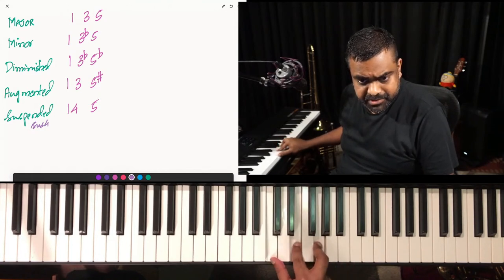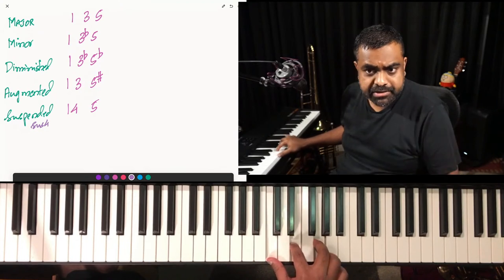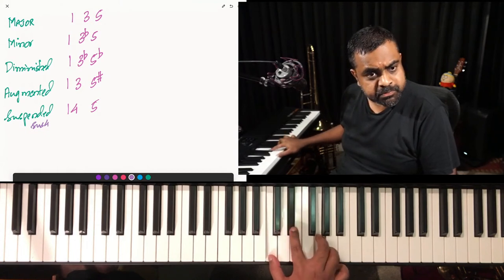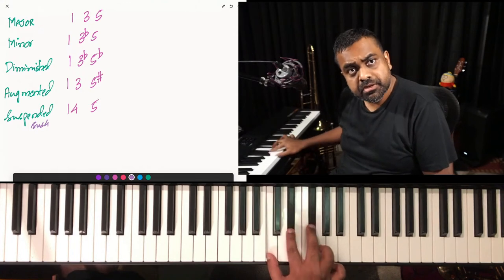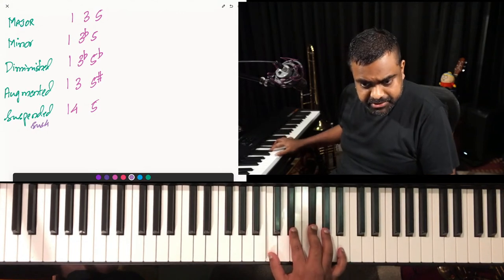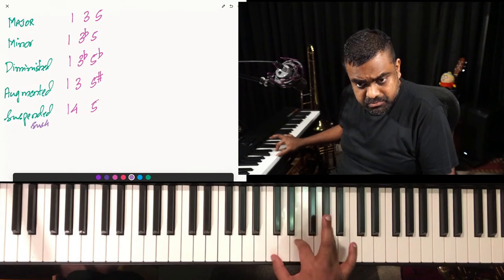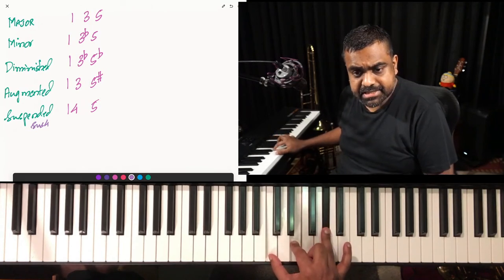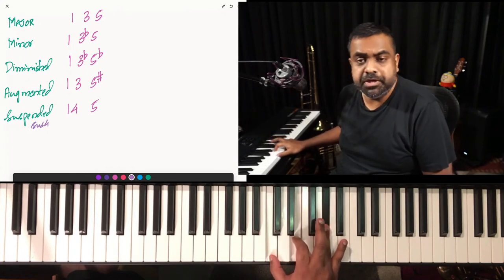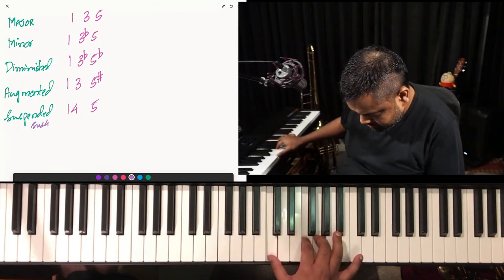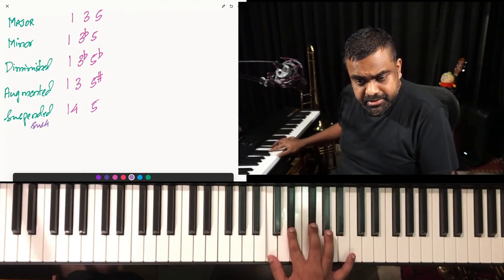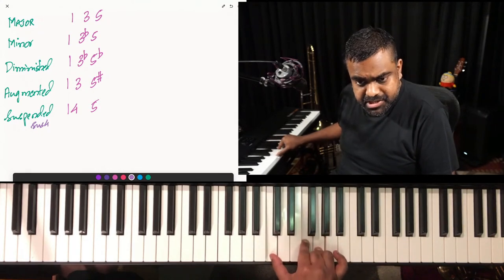The suspended sus4 chord is one-four-five. Building on root C: C major — there we go. If you take the minor version, just flatten the third. Then the diminished — flatten the third and the fifth. Then the augmented — keep the third as it is and raise the fifth. And then the suspended. Major, minor, diminished, augmented, suspended.